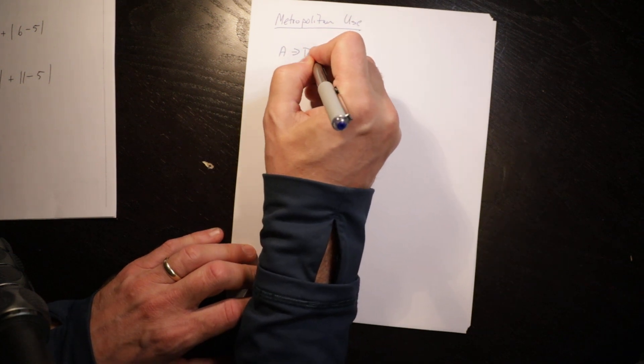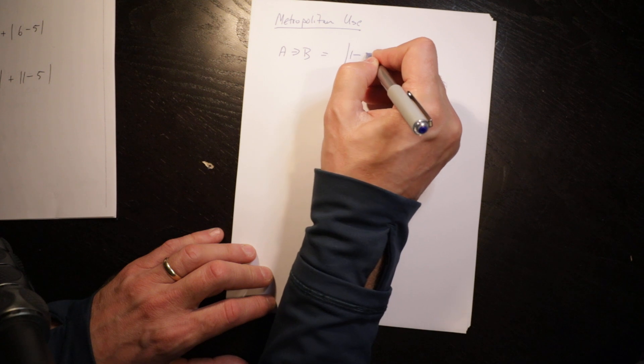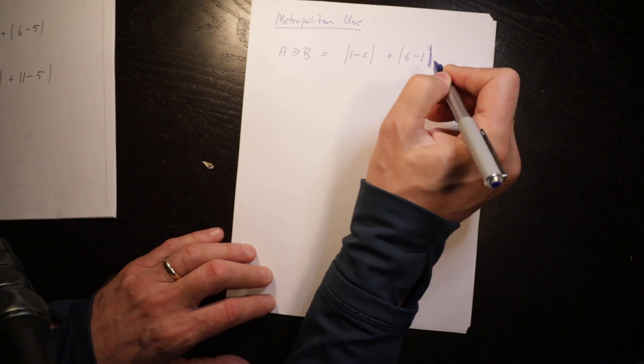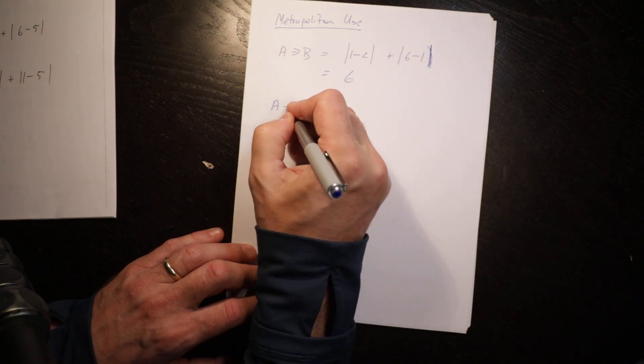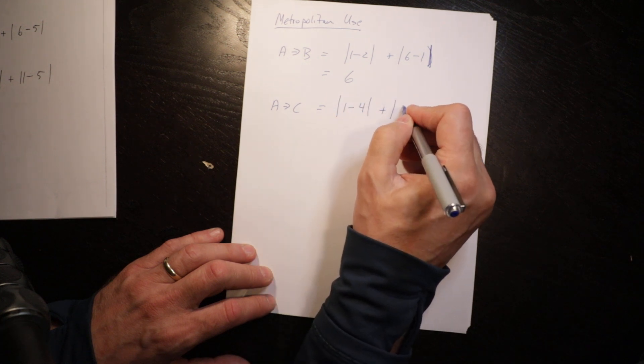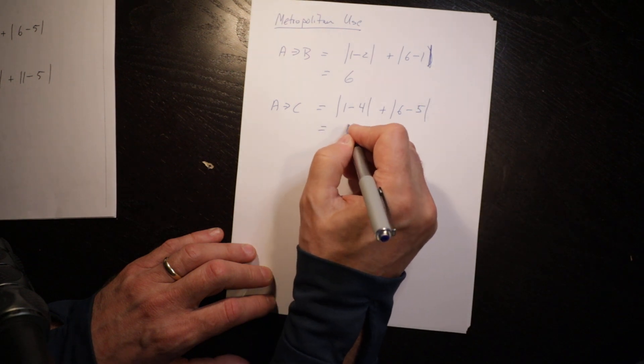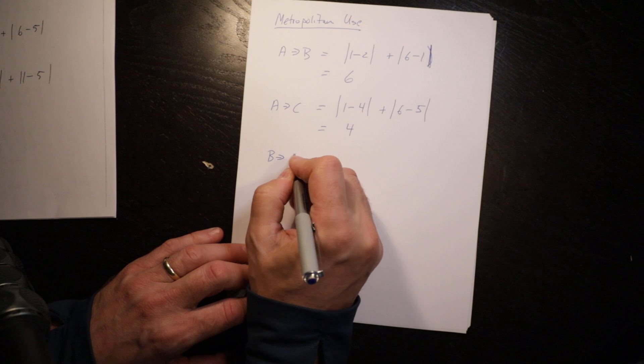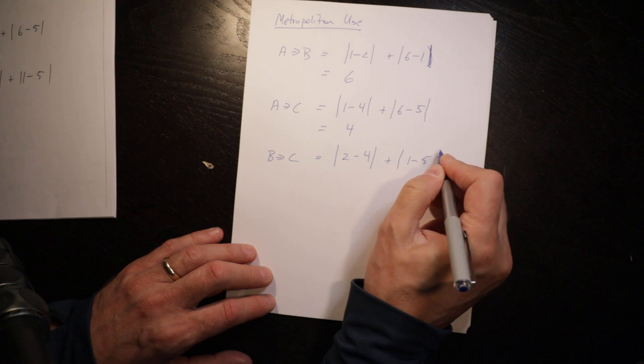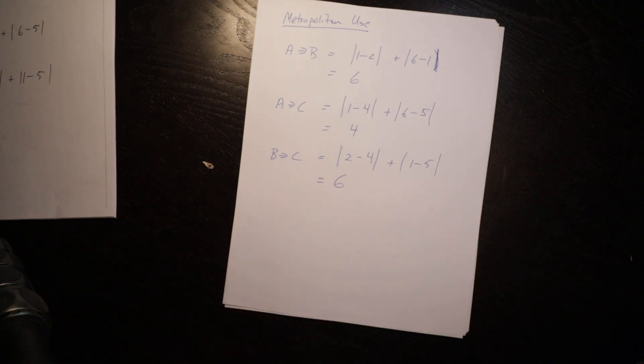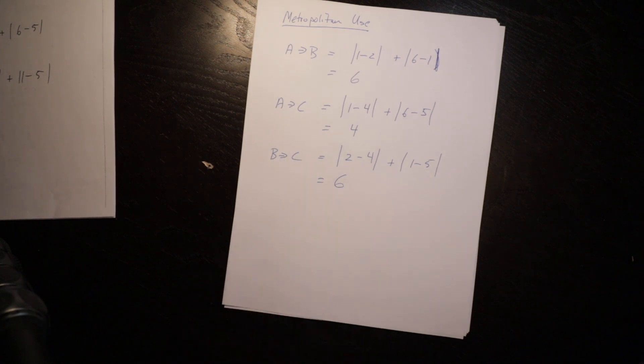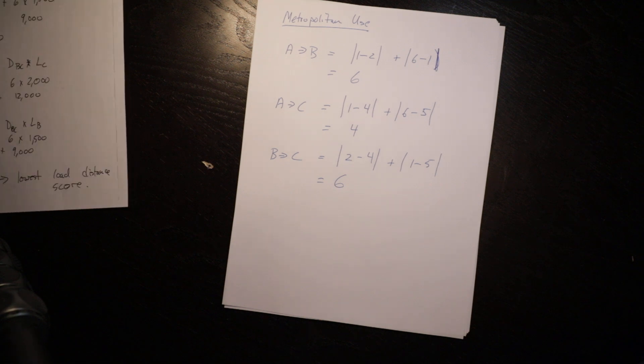A to B equals the absolute value of 1 minus 2 plus absolute value of 6 minus 5, which equals 4. And B to C equals the absolute value of 2 minus 4 plus the absolute value of 1 minus 5, which equals 6. In this circumstance we've calculated the distances. The distance from B to C is the same as the distance from C to B so we only have to calculate it once.